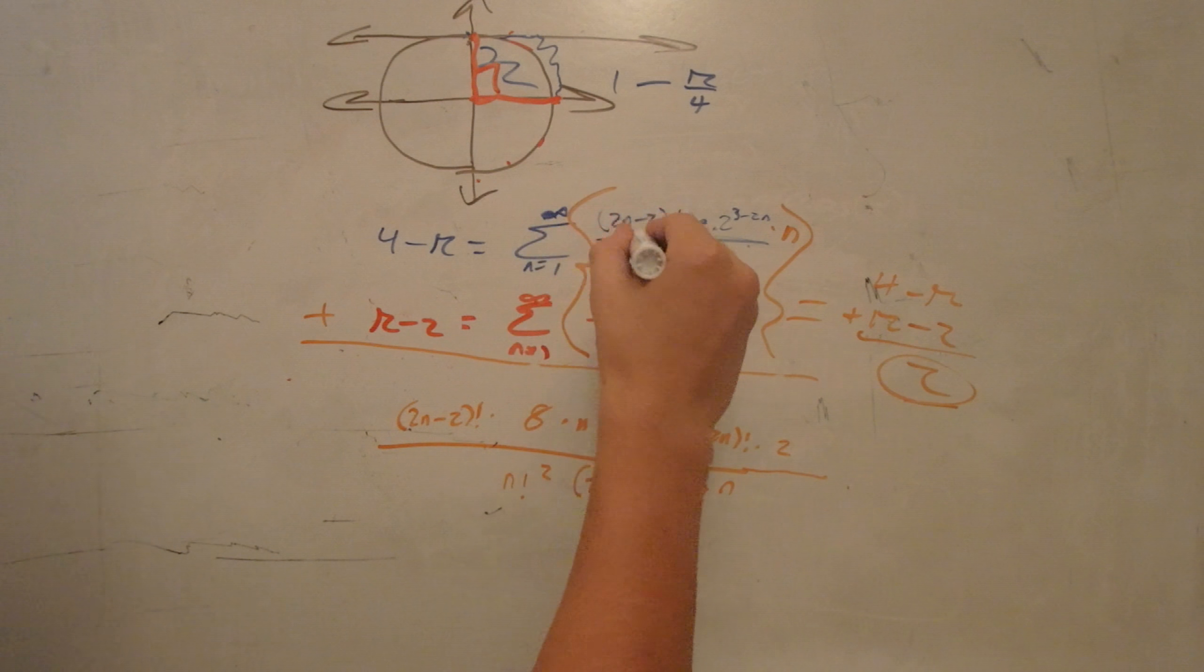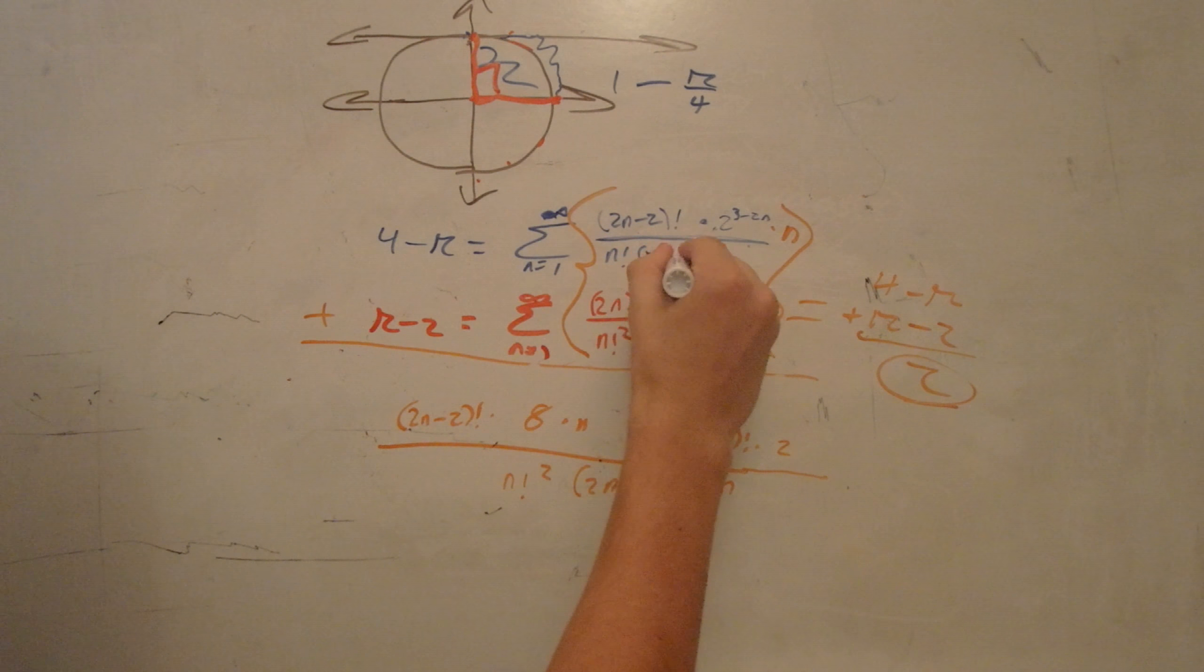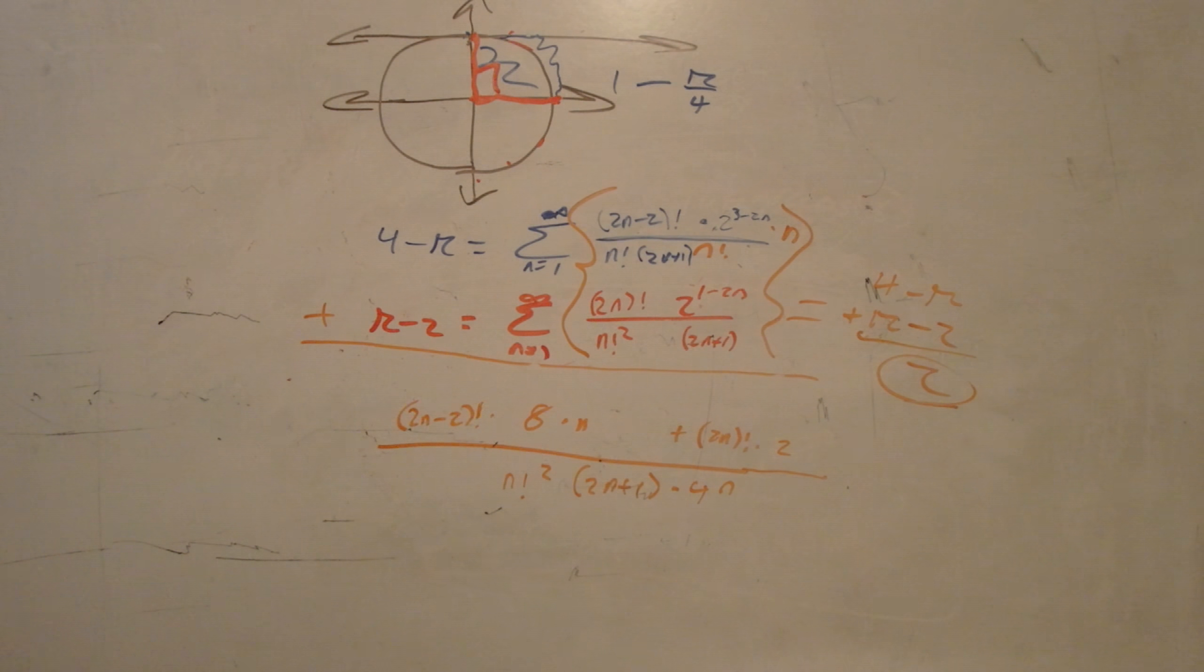I need to stop making these stupid mistakes. This equation should have had a 2n plus 1 in this bottom here. We can write 2n minus 2 factorial as 2n factorial divided by 2n times 2n minus 1.